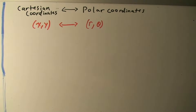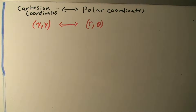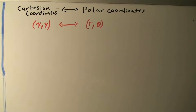We're going to talk about how to convert from Cartesian coordinates — your normal x and y — to polar coordinates r and theta. This is going to be for two dimensions. There is also a three-dimensional version: instead of x and y you have x, y, and z, and instead of r and theta you have r, theta, and phi.